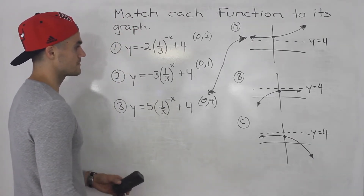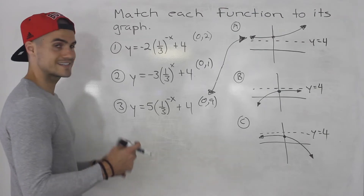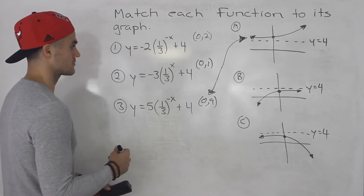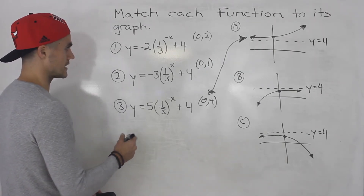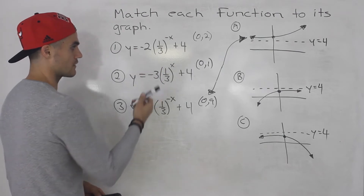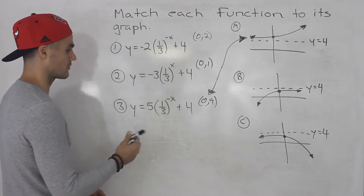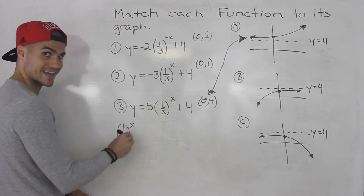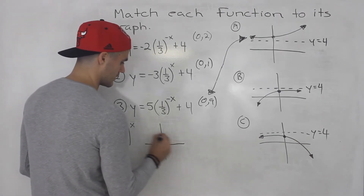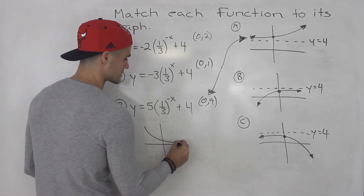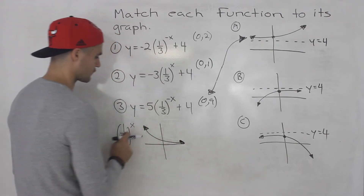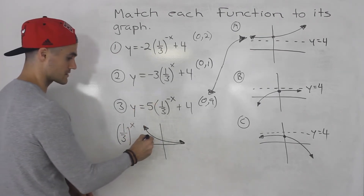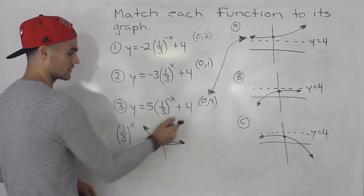The other method is to take the parent functions and put them through the transformations. Both of these functions have a base of 1/3 to the power of x. If you were to take this parent function and plot it, it would look something like a decreasing curve. When you have a fraction between 0 and 1 to the power of x it always takes this shape, whereas a number above 1 to the power of x would be increasing.